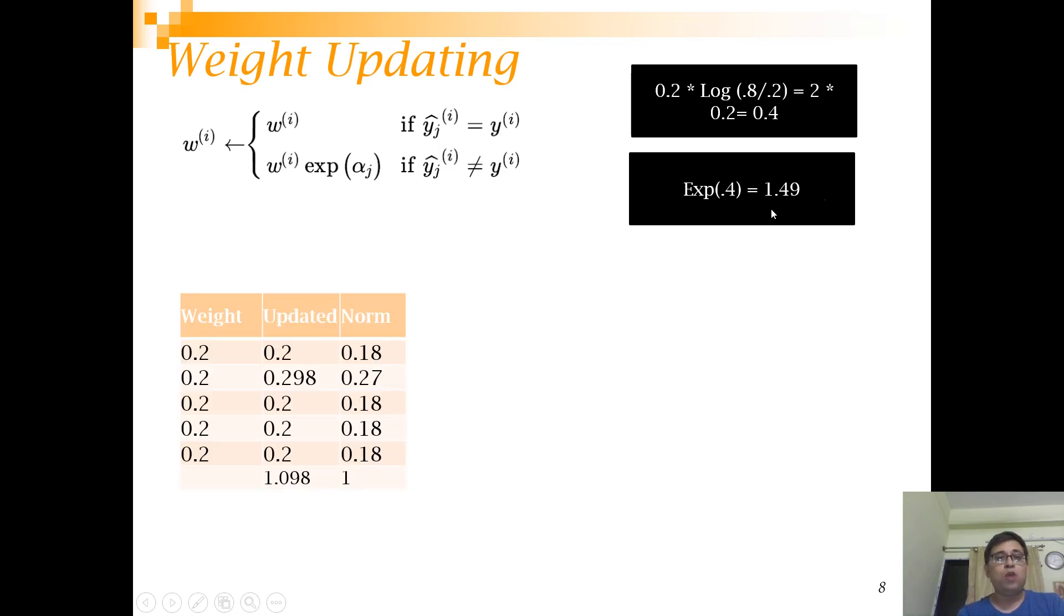We multiply by 1.49 and get 0.29. However, when we add it up, it comes to 1.09. You can understand that these are probabilities, so it cannot be more than one. So we normalize - we divide or adjust all the weights by this factor of 1.098, so that the final figure is 1. The most important point is that all instances correctly classified now have a weight of 0.18, however the one that was misclassified has a weight of 0.27.